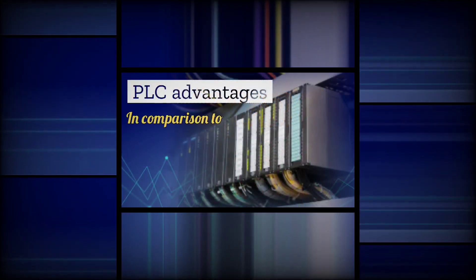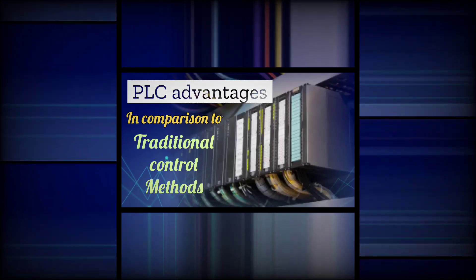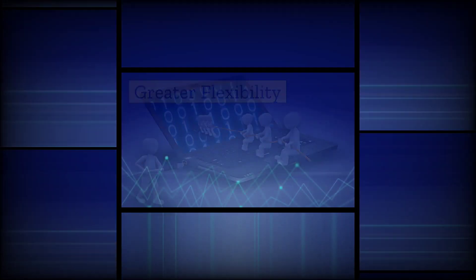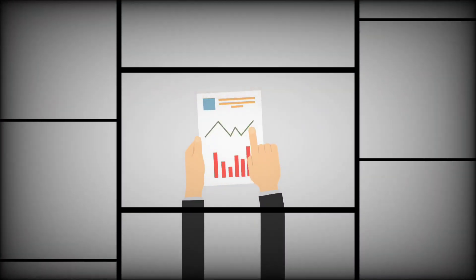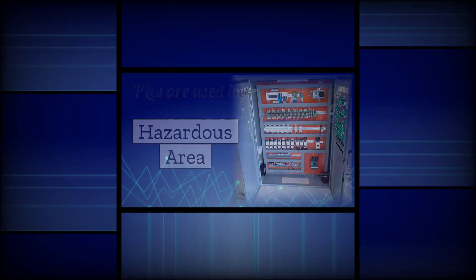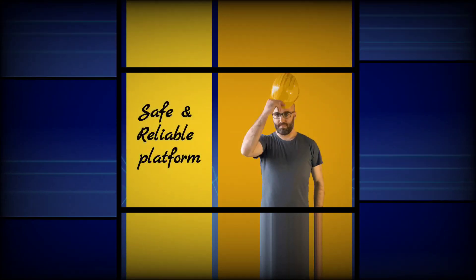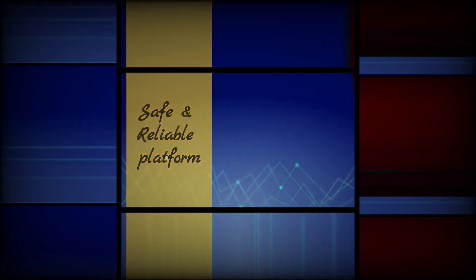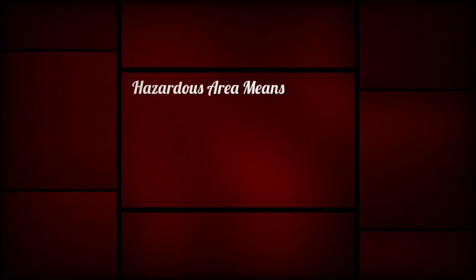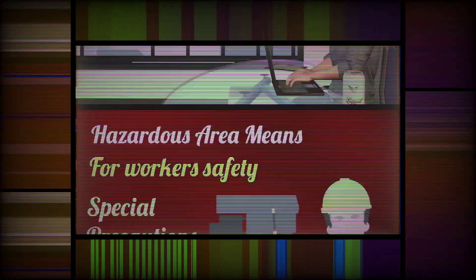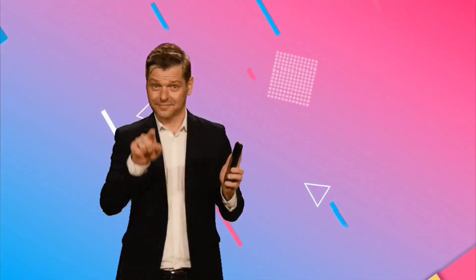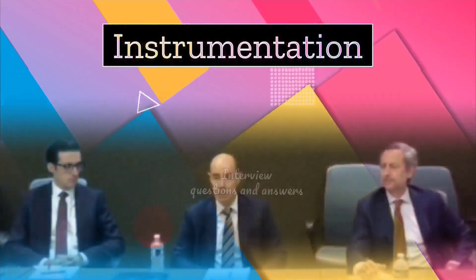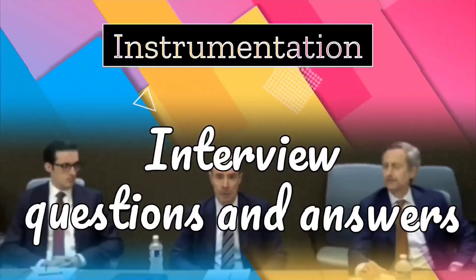Advantages of PLCs in comparison to traditional control methods are greater flexibility, faster response time, improved accuracy, better scalability, and more energy efficiency. PLCs are also used to control industrial operations in hazardous areas and provide a safe and reliable platform. Hazardous area is one where for the safety of the workers, special precautions are taken. In today's video we will discuss instrumentation interview questions and answers that are asked to instrument technicians and engineers.